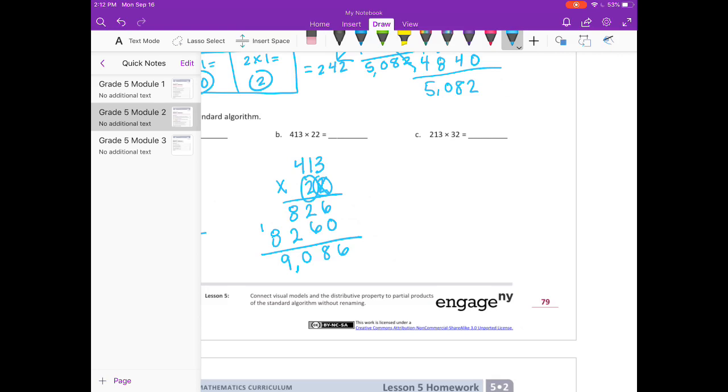And part C. 213 times 32. Starting with the ones place. 2 times 3 is 6. 2 times 1 is 2. 2 times 2 is 4. Put our placeholder down. On to the tens place. 3 times 3 is 9. 3 times 1 is 3. 3 times 2 is 6. Add everything together. 2 plus 9 is 11. 1 plus 4 plus 3 is 8. So we get 6,816.